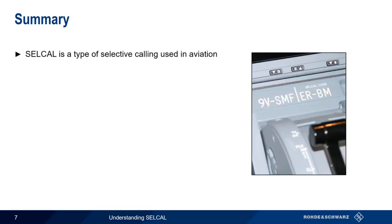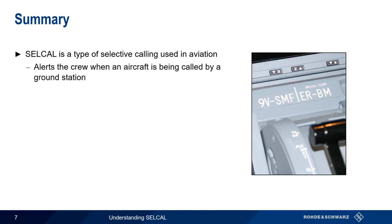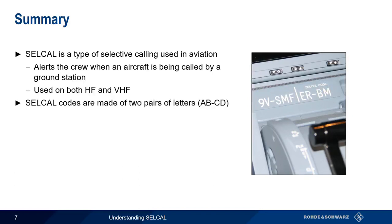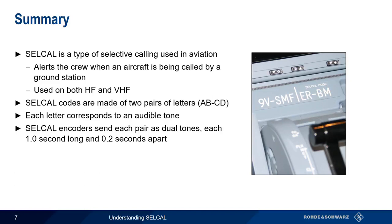In summary, SELCAL is a type of selective calling used in aviation. SELCAL is designed to reduce crew fatigue by providing an alert when their aircraft is being called by a ground station, and SELCAL can be used for both HF and VHF communications. SELCAL codes are made up of two pairs of letters, with each letter corresponding to a different audible tone. A SELCAL encoder sends each pair by transmitting the two tones simultaneously, with each dual tone lasting one second and a 0.2 second pause between them.